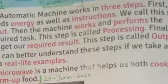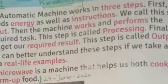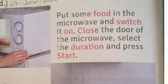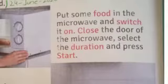We can better understand these steps if we take a look at real life examples. A microwave is a machine that helps us both cook and warm up food. Put some food in the microwave and switch it on. Close the door of the microwave. Select the duration and press start.